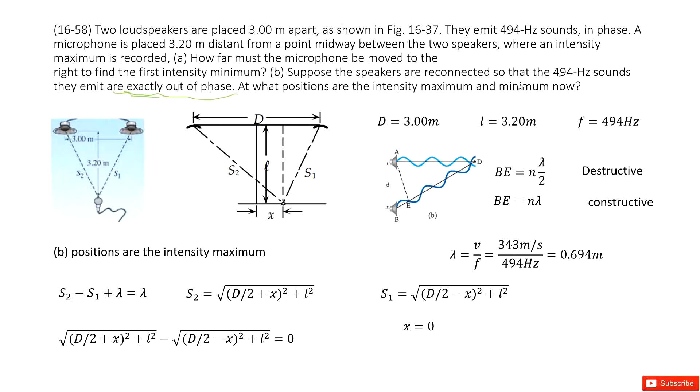At what position are the intensity maximum or minimum? So when it is maximum, this part is called constructive. So that means the distance should be N times lambda. When it is minimum, called destructive, the distance should be N times lambda divided by 2. So first one, suppose this intensity is maximum. So we look at the constructive interference.